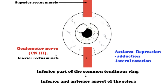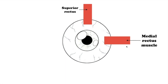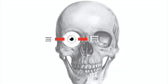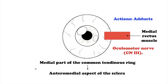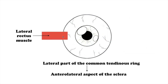The next muscle is the medial rectus muscle — here we are talking about the right eye. The medial rectus muscle originates from the medial part of the common tendinous ring and attaches to the anterior medial aspect of the sclera. This muscle adducts the eyeball. It is innervated by the oculomotor nerve.